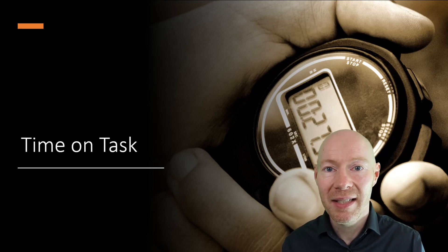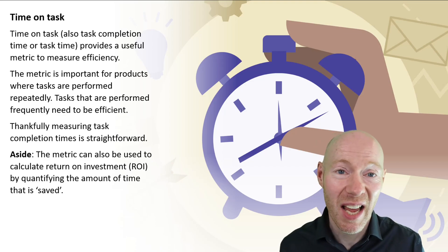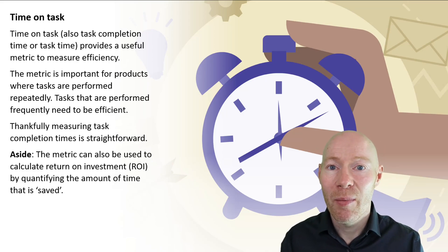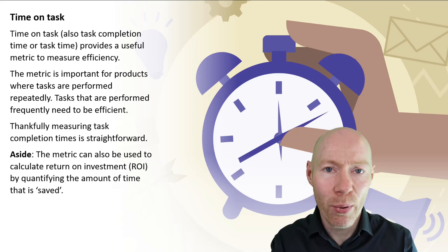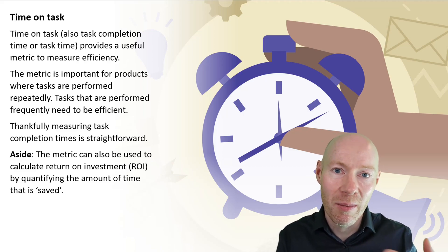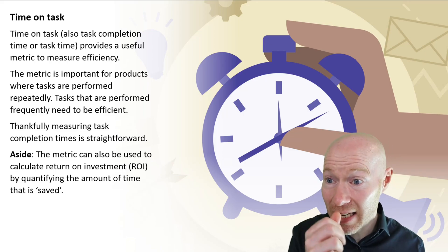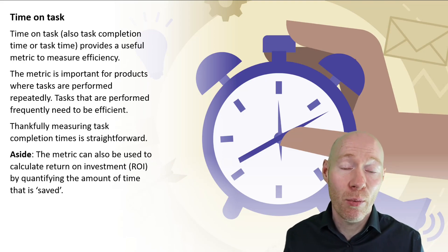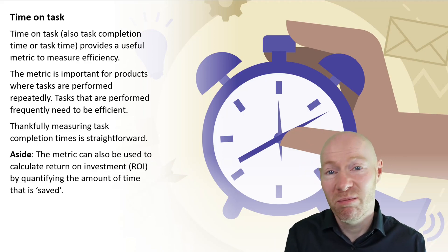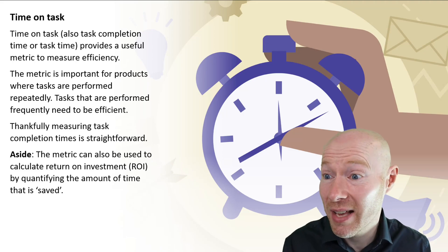Time on task is the next metric, related to task success. It simply measures the length of time the user took on a task — also known as completion time or task time. It's a useful additional insight: not only was the user able to do it, but how long did it take? When thinking about efficiency and showing improvements, time on task is important. It's particularly valuable for products where the user performs a certain task repeatedly, and we want to ensure it can be completed in the minimum amount of time.